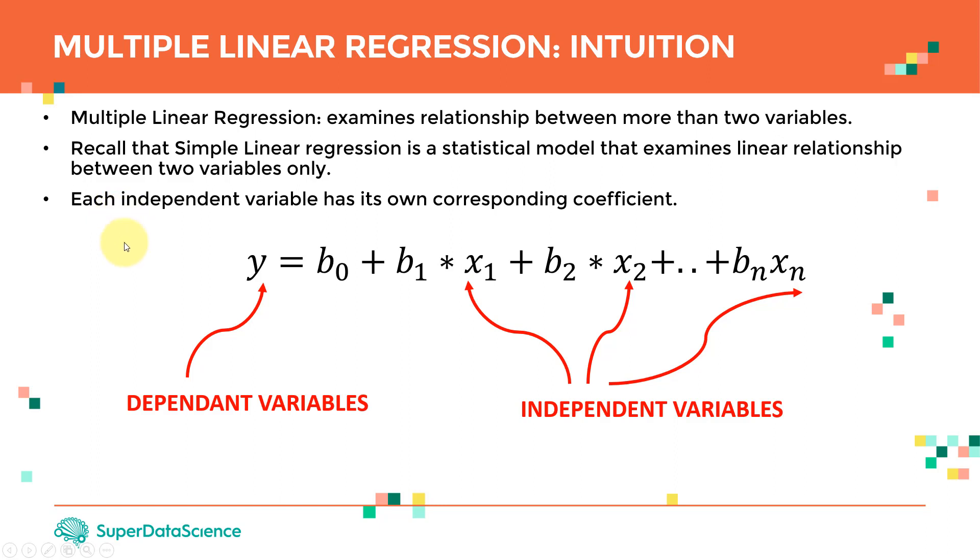Let's take a look at the equations. As you can see here, the equation is pretty simple. It's simply an extension of simple linear regression. If you recall, y equals b_0 plus b_1 times x_1, and that's it. That was the equation for simple linear regression, because we had x_1, or x and y, and that's it.